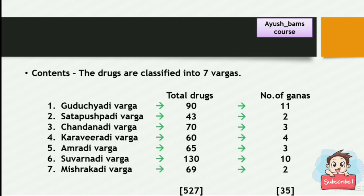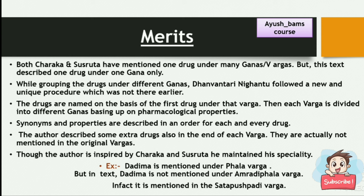Some merits of Dhanvantari Nighantu: Both Charaka and Sushruta mentioned one drug under many Ganas or Vargas, but in this text each drug is described under only one Gana. While grouping drugs, Dhanvantari Nighantu followed a new and unique procedure — drugs are named on the basis of the first drug under that Varga, and each Varga is divided into different Ganas based on pharmacological properties. Synonyms and properties are described in order for each drug. The author also described some extra drugs at the end of each Varga, which are not mentioned in the original Vargas. Though inspired by Charaka and Sushruta, the author maintained his own specialty.